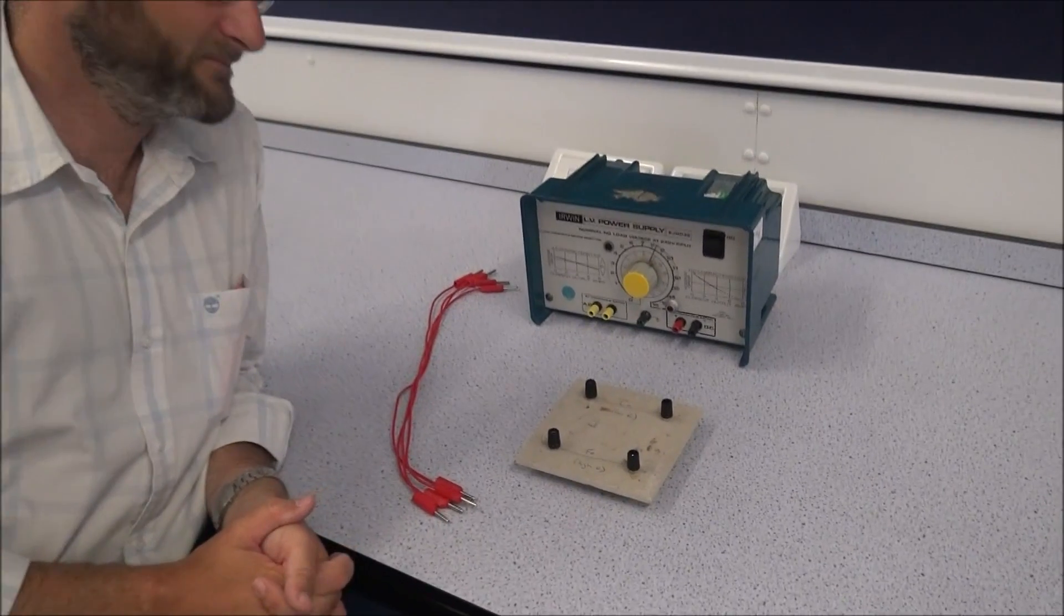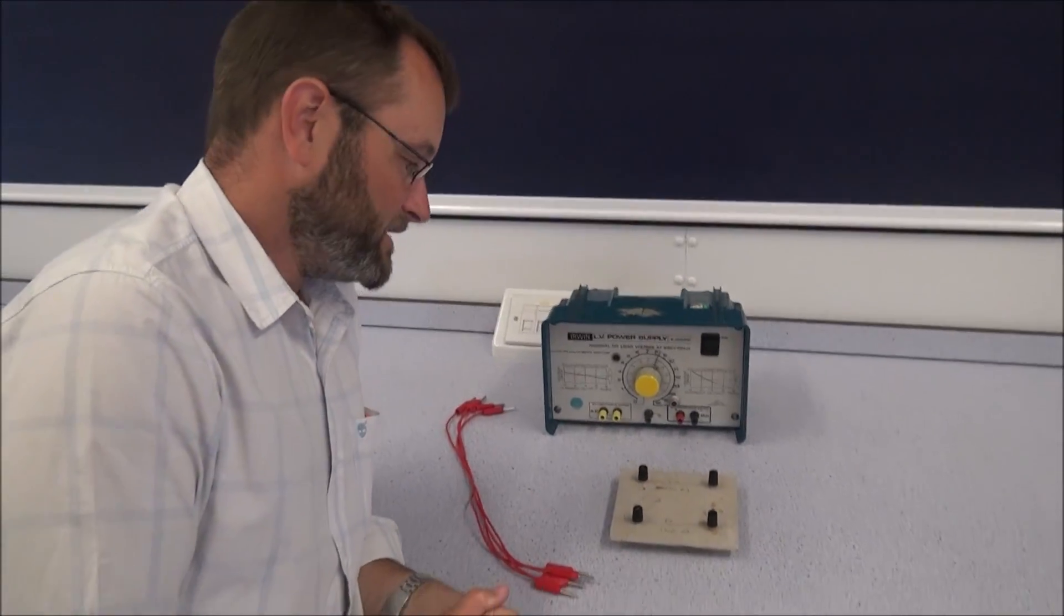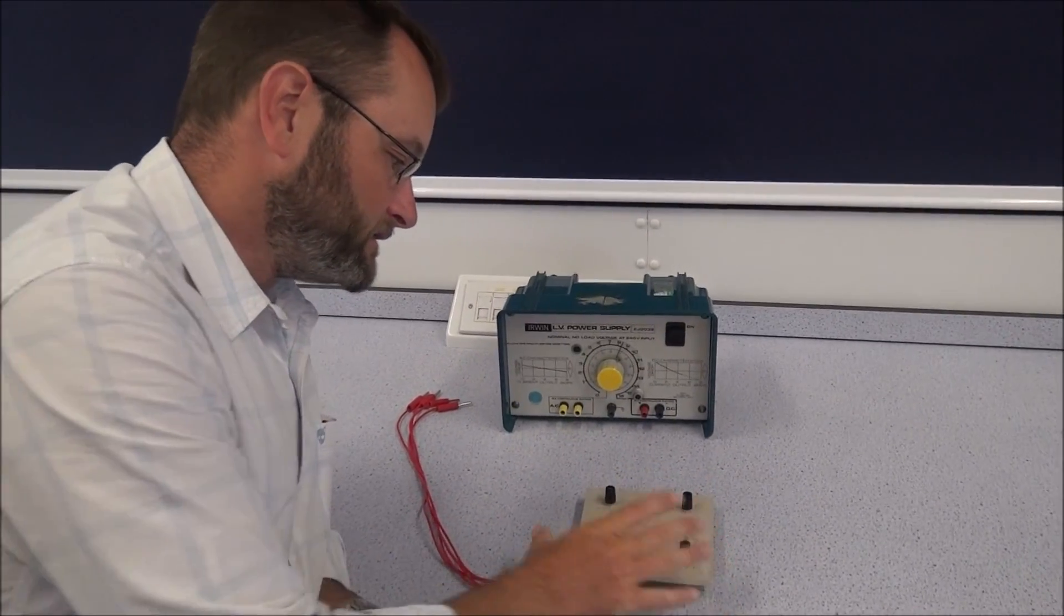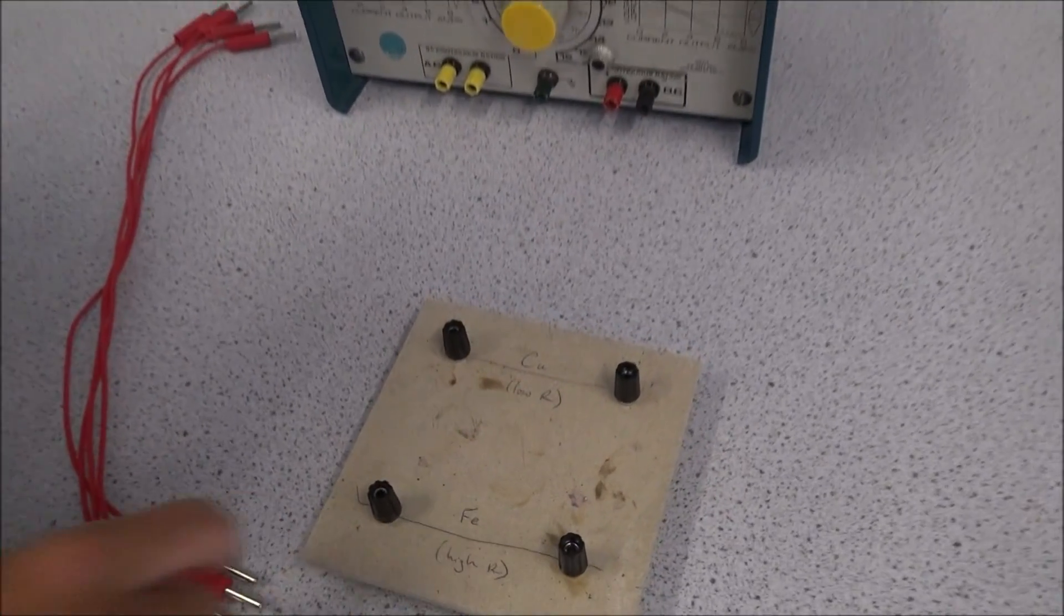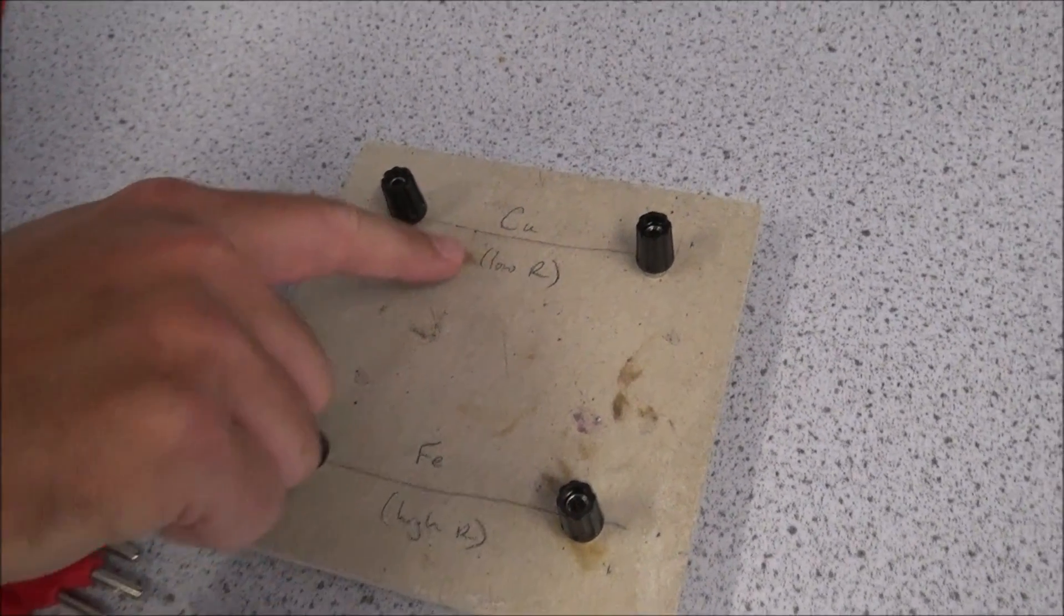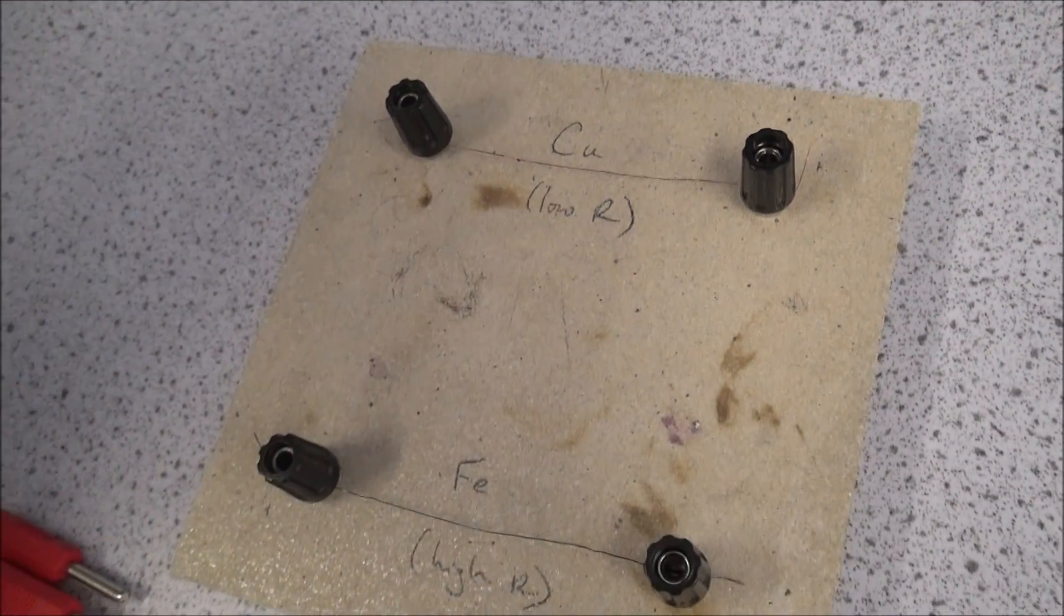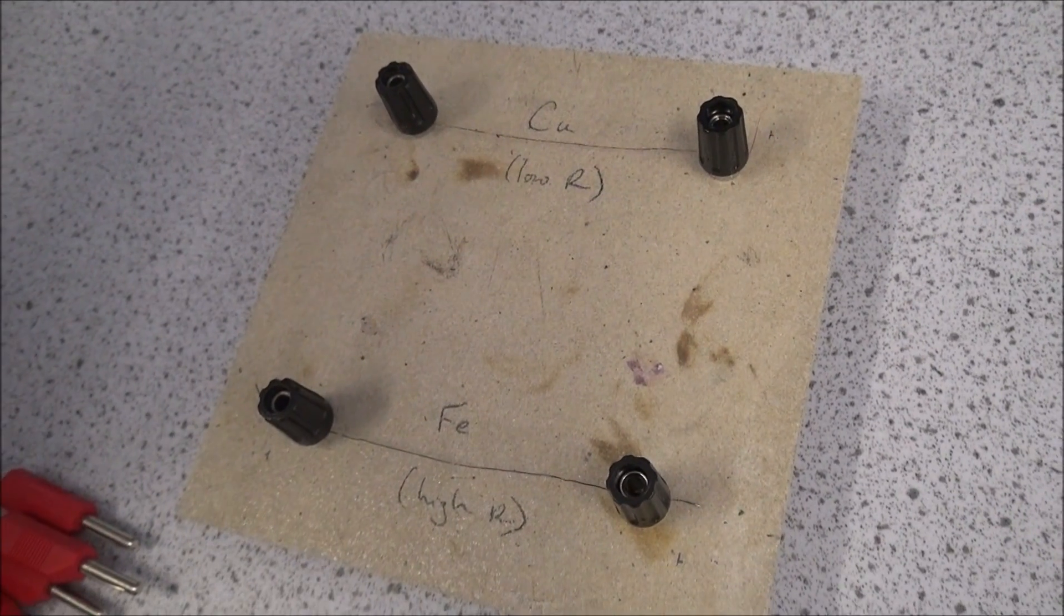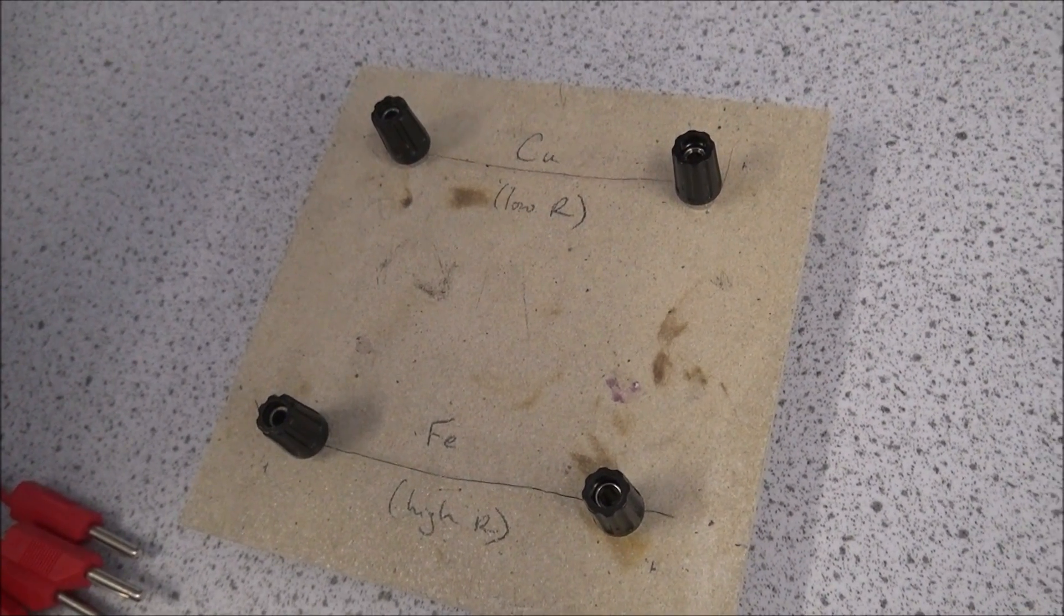So this looks like quite a simple demo. Can you explain a bit more about what it is and what it shows? Absolutely. This is really easy to do. This is just four 4-millimeter sockets mounted on a piece of old heatproof mat. At the top we've got a length of copper wire, about 10 centimeters or so, and on the lower pair we've got an identical piece of iron.